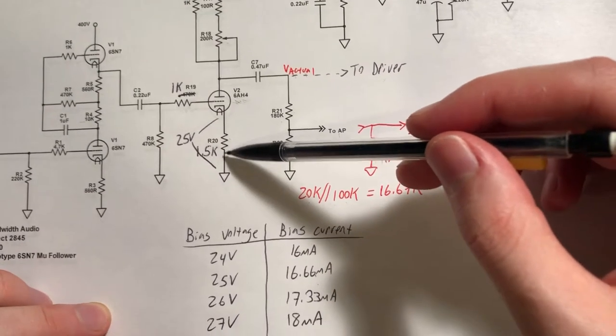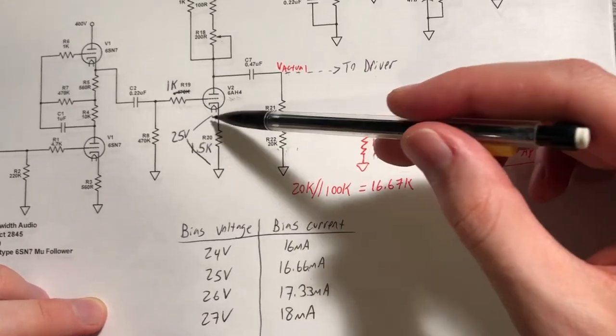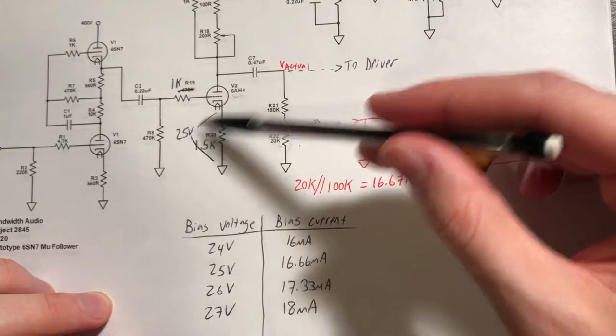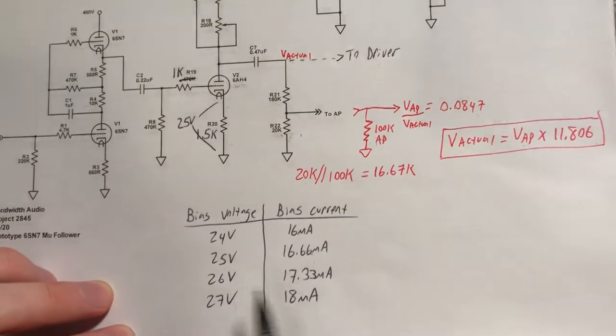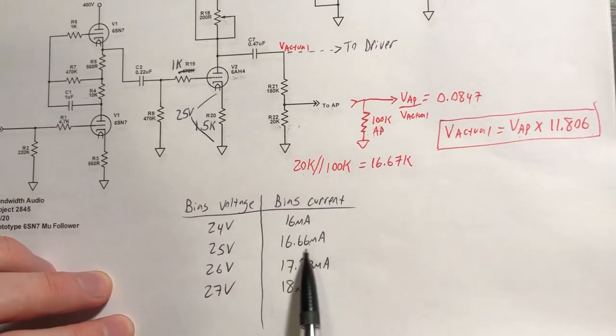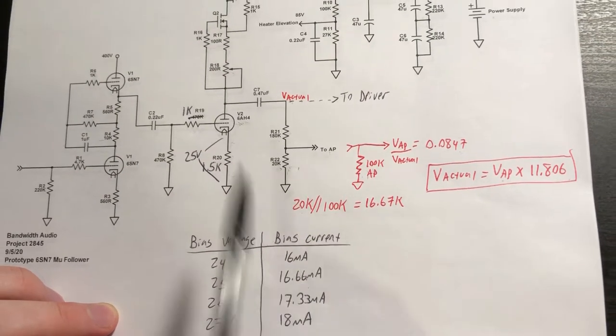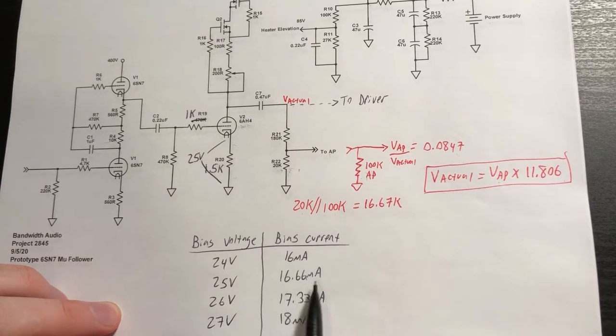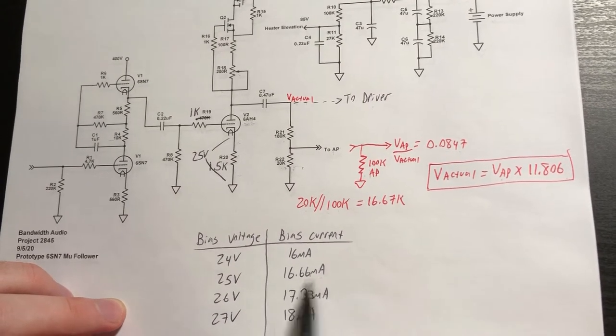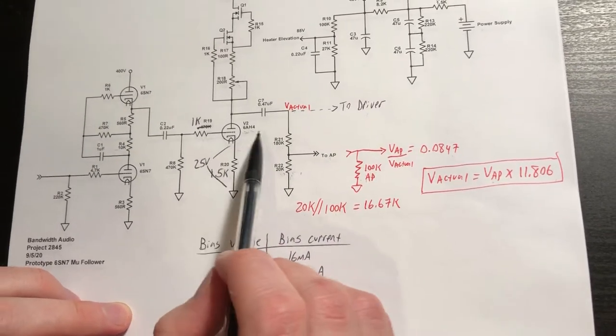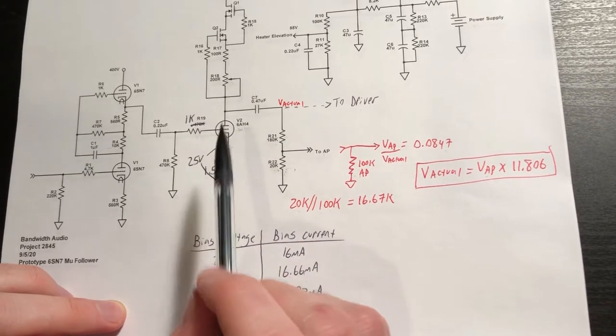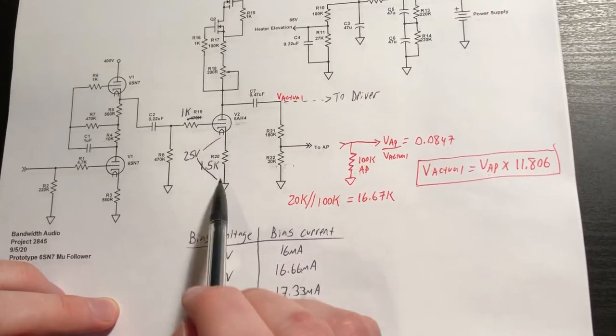So with a 1.5 kOhm cathode resistor, I get about 25 volts of bias voltage across that resistor and that corresponds to about 16.66 milliamps. So if I set my constant current source using the adjustment to this current level, with the 6AH4s I have on hand, that seems to center the bias quite well.